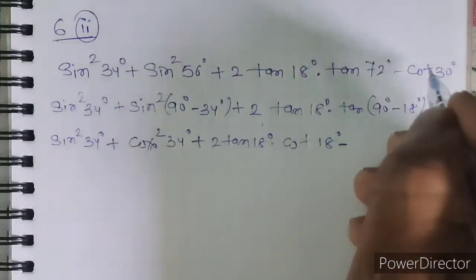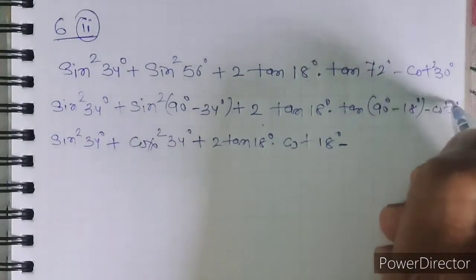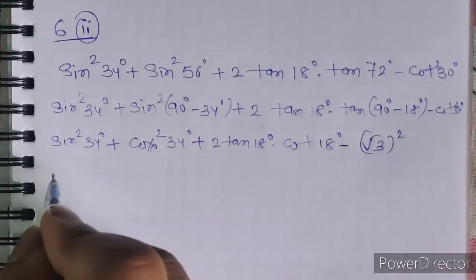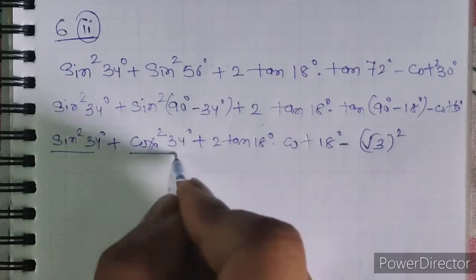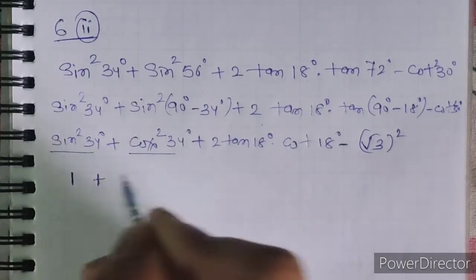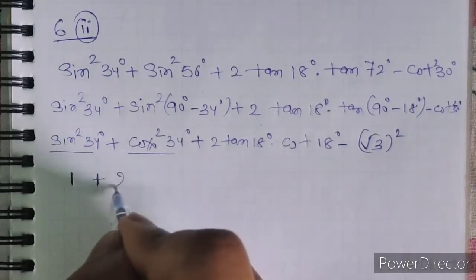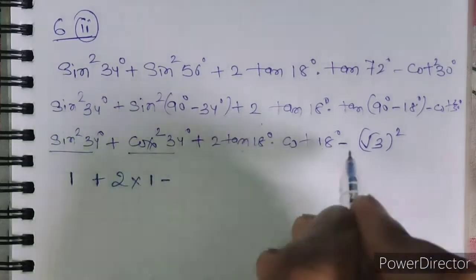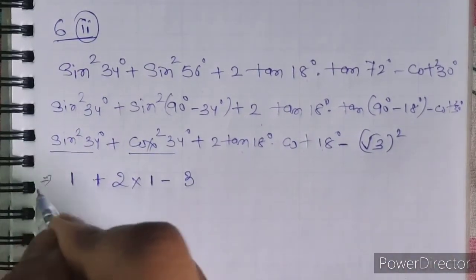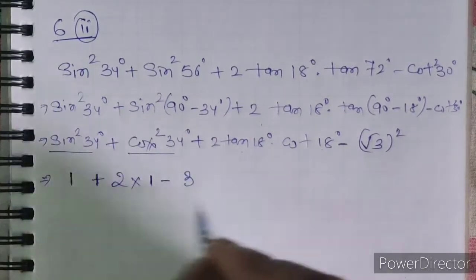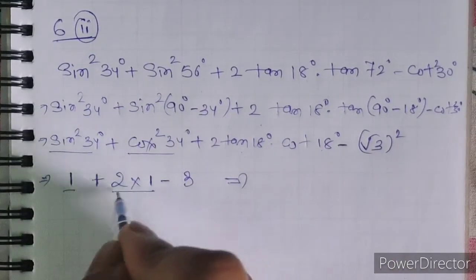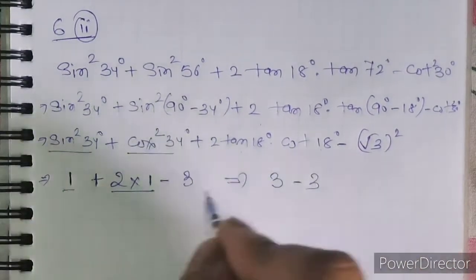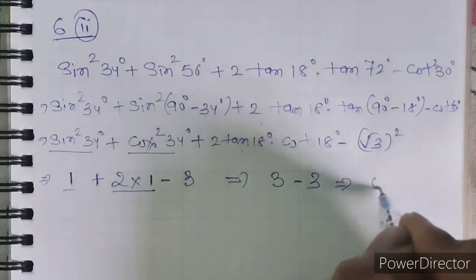So sin square 34 plus cos square 34 equals 1 by the identity. For 2 tan 18 into cot 18, that equals 2 times 1 equals 2. And cos square 30 is root 3 squared, which is 3/4 — wait, cos 30 is root 3 over 2, so cos square 30 is 3/4. So we get 1 plus 2 minus 3, which equals 0. The answer is 0.